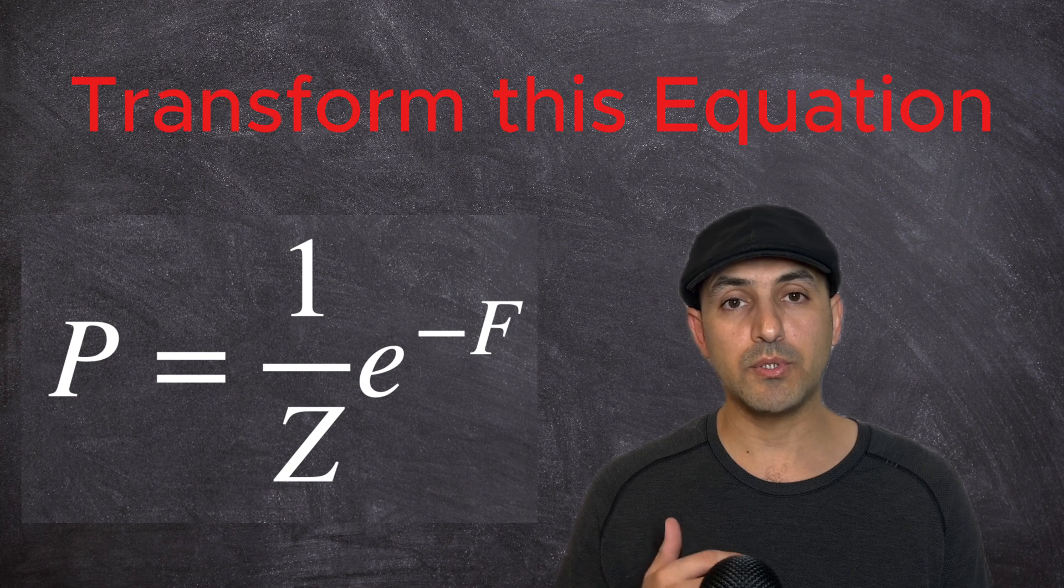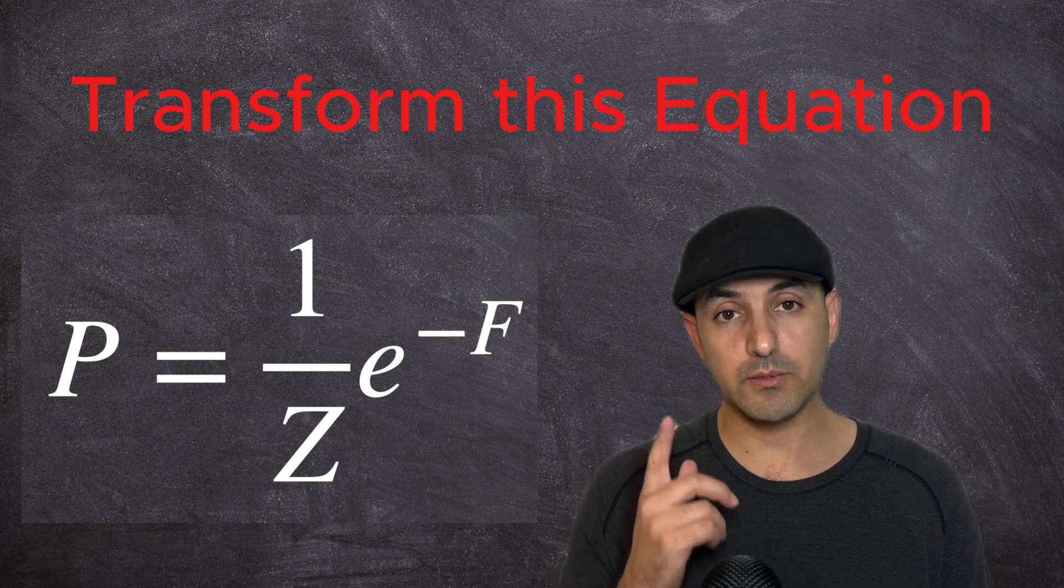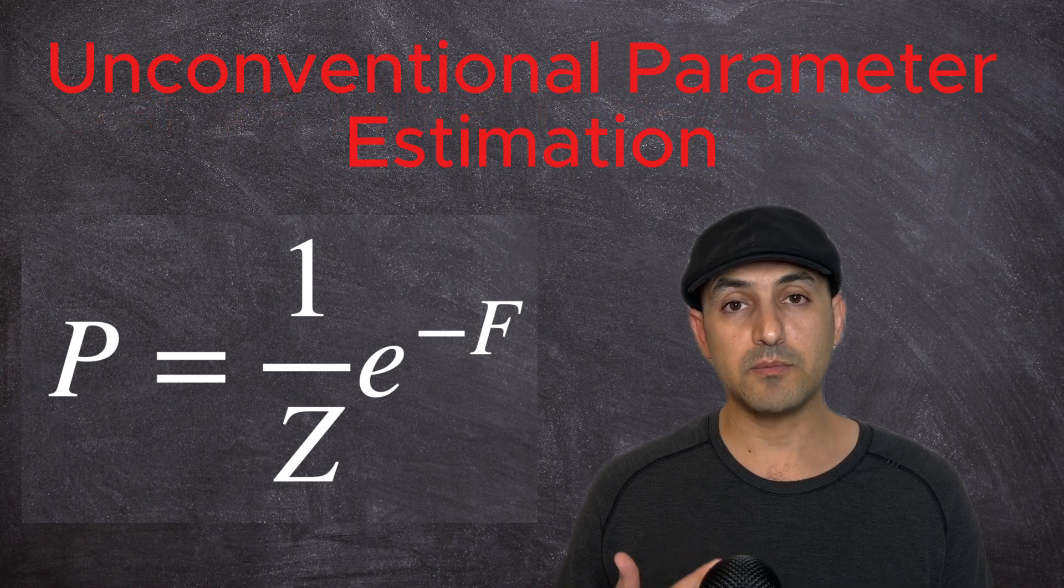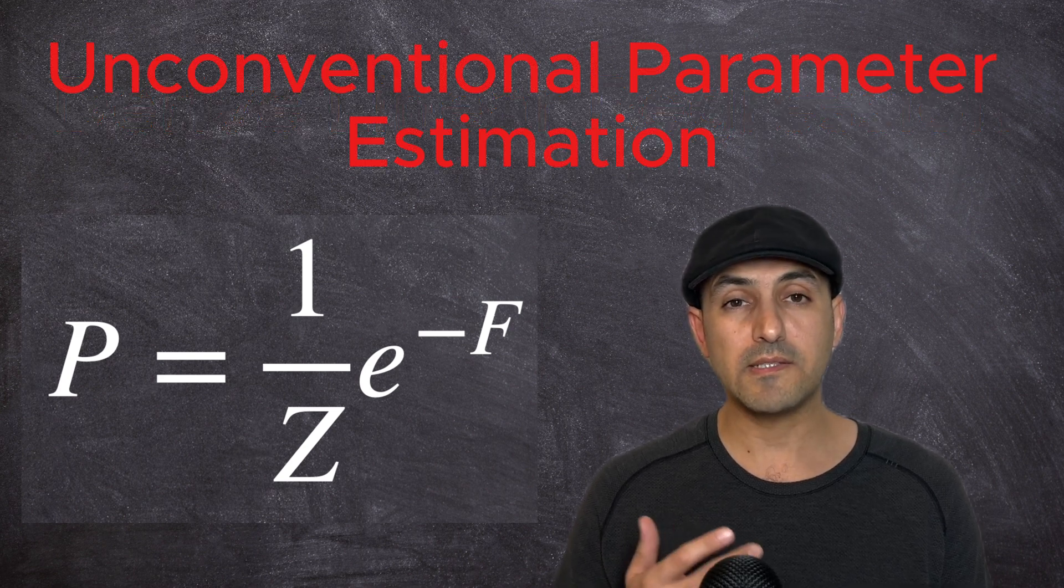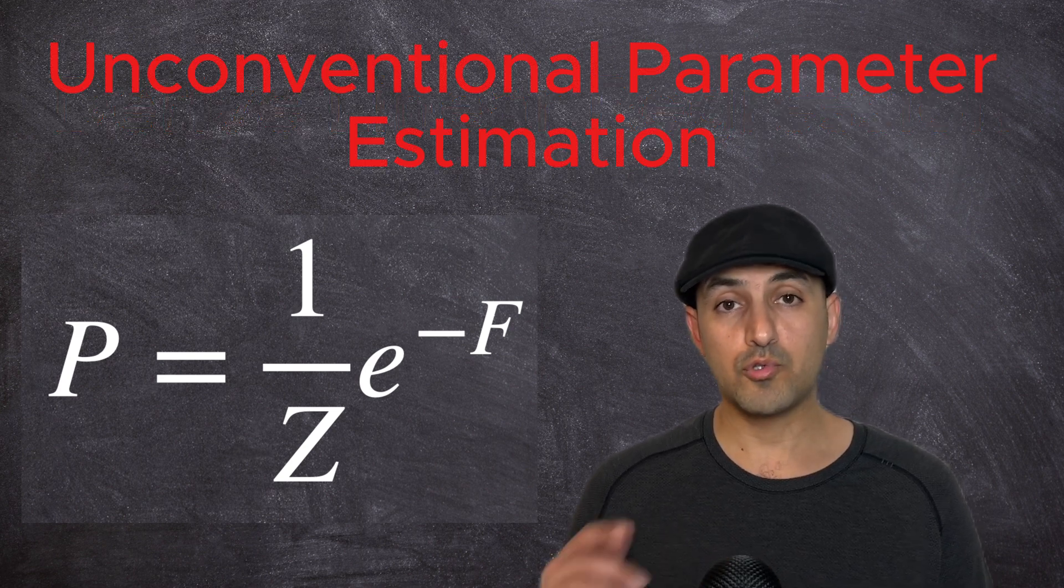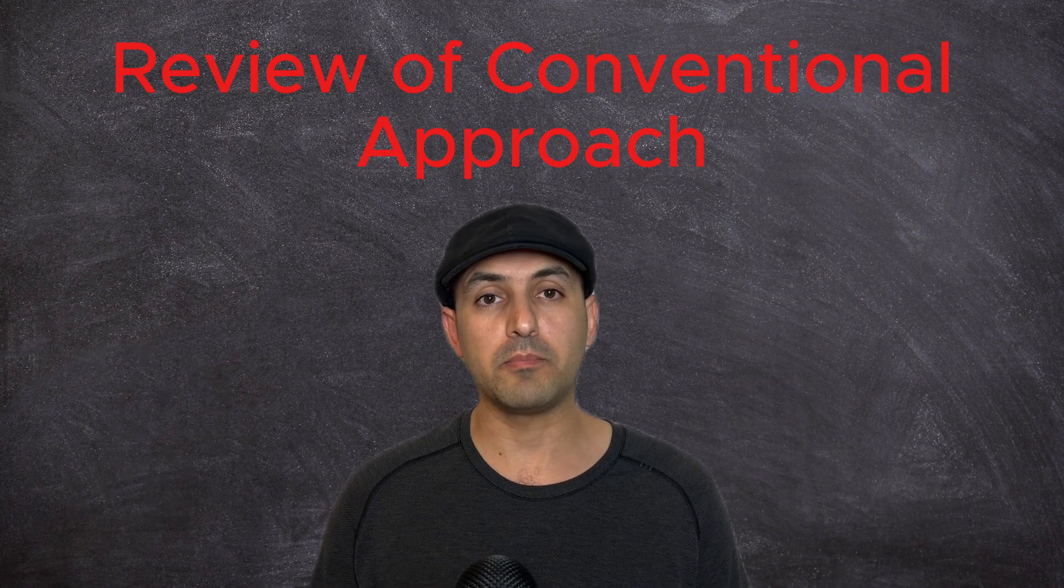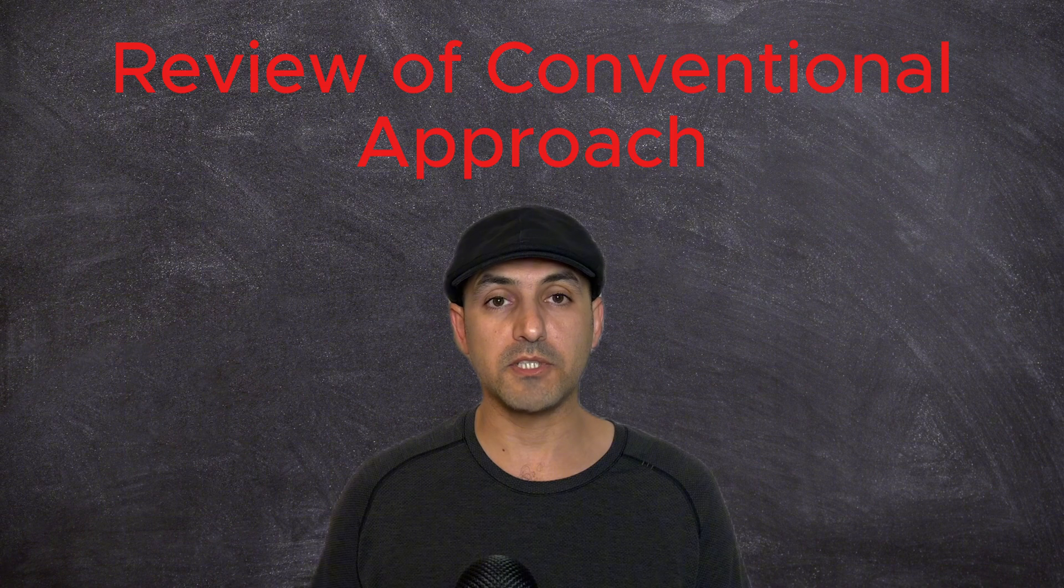To demonstrate how we can reduce computations and hence the cost by changing our approach to building machine learning models, in the rest of this video, I will start from this equation, derive linear regression out of it, and estimate its parameters with less than usual computation. To show you the difference, let me first briefly review the conventional process of parameter estimation in machine learning.